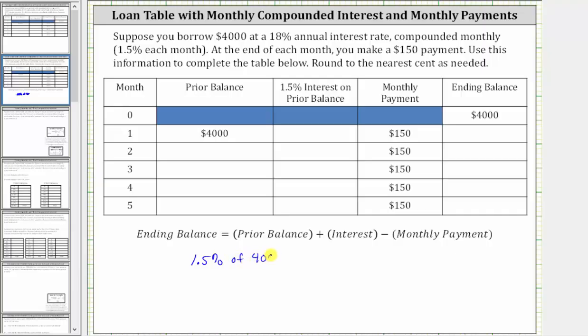To do this, we convert 1.5% to a decimal and multiply by 4,000. 1.5% is equal to 0.015 as a decimal. Now we have times 4,000, which is equal to 60, which means you are charged $60 of interest during month one.